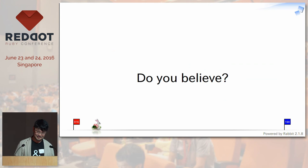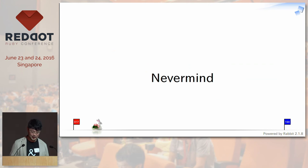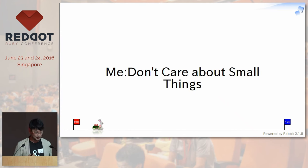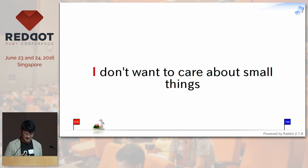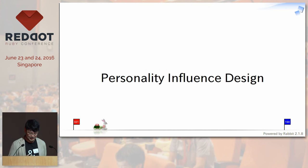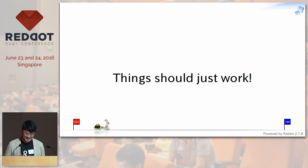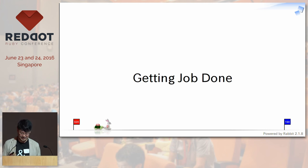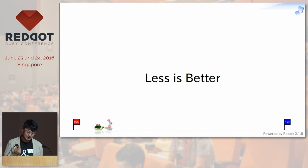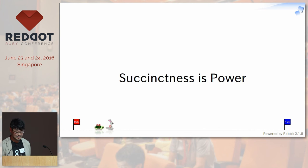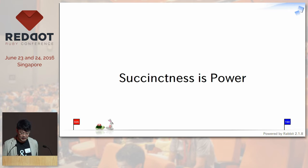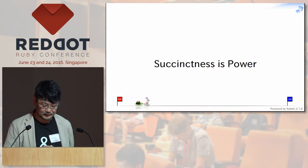Do you believe it? Maybe not — that's okay. The important point is: I'm blood type O, and I don't care about small things. I don't want to care about small things. Things should just work. Since I designed Ruby, things should just work. I really believe in the succinctness of its power, as Paul Graham once told about his idea of programming language. The design of Ruby is highly influenced by my personality. Dynamic typing is one of them.